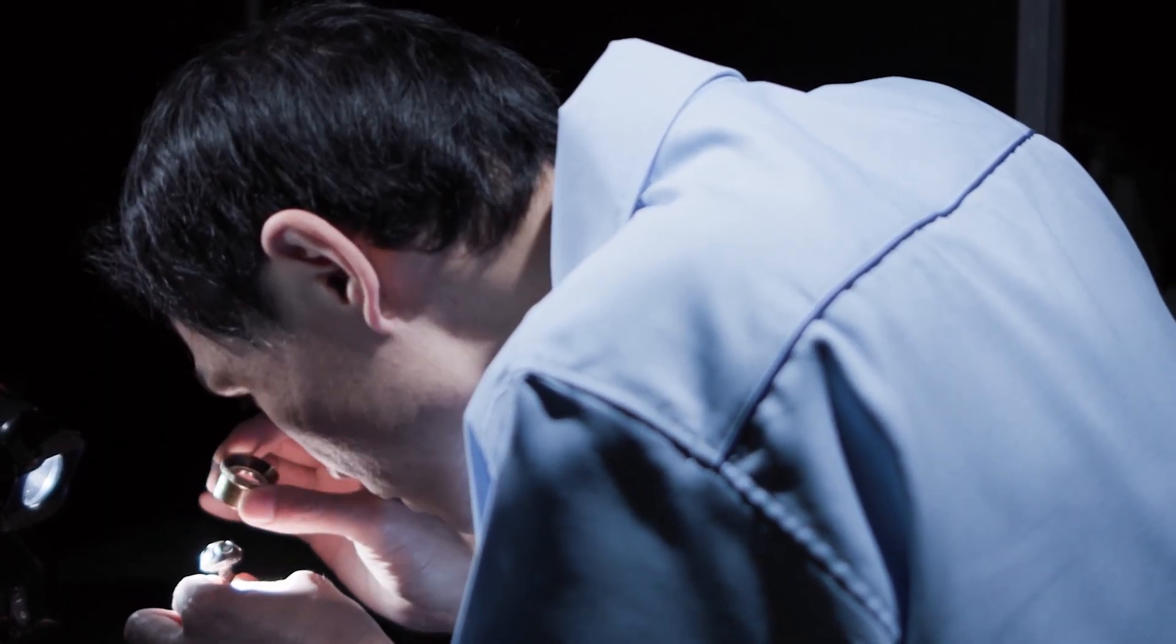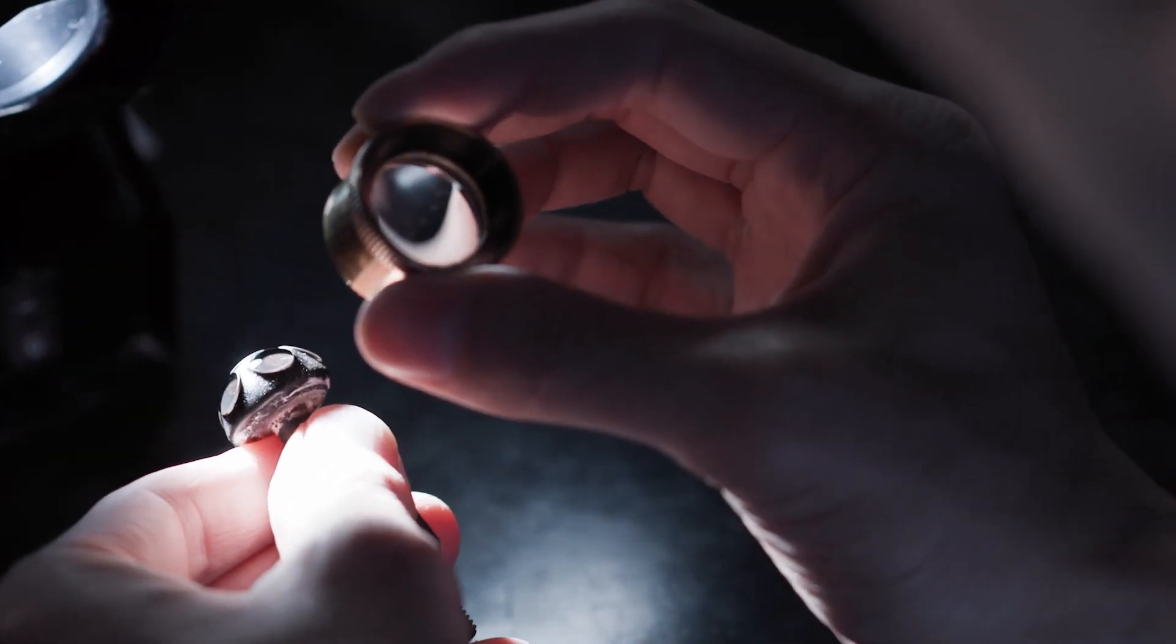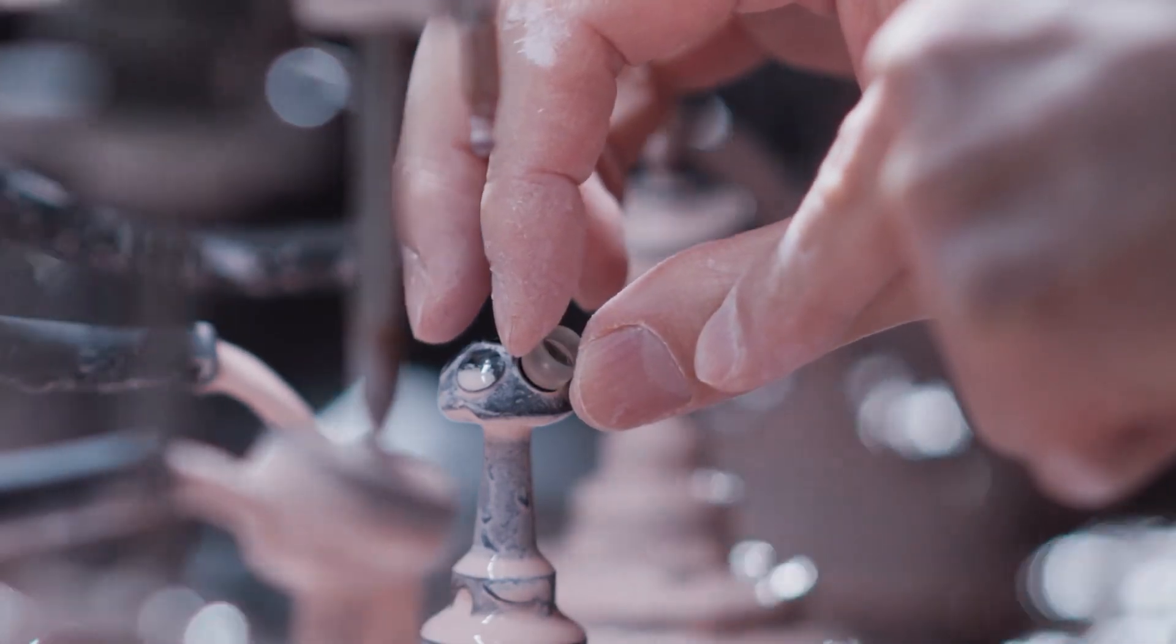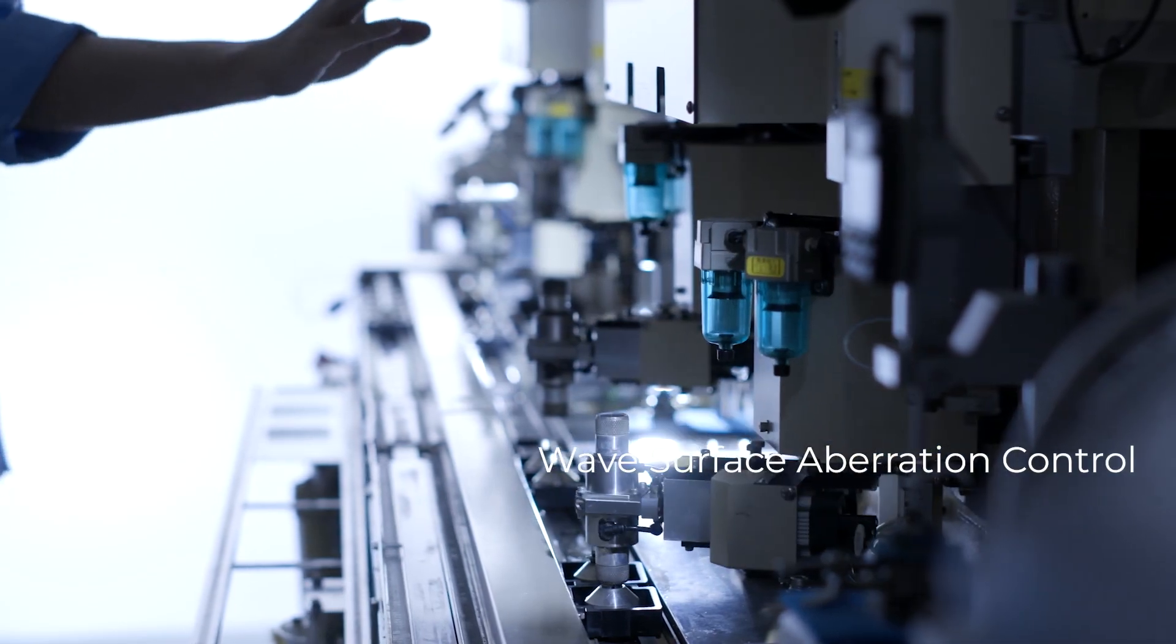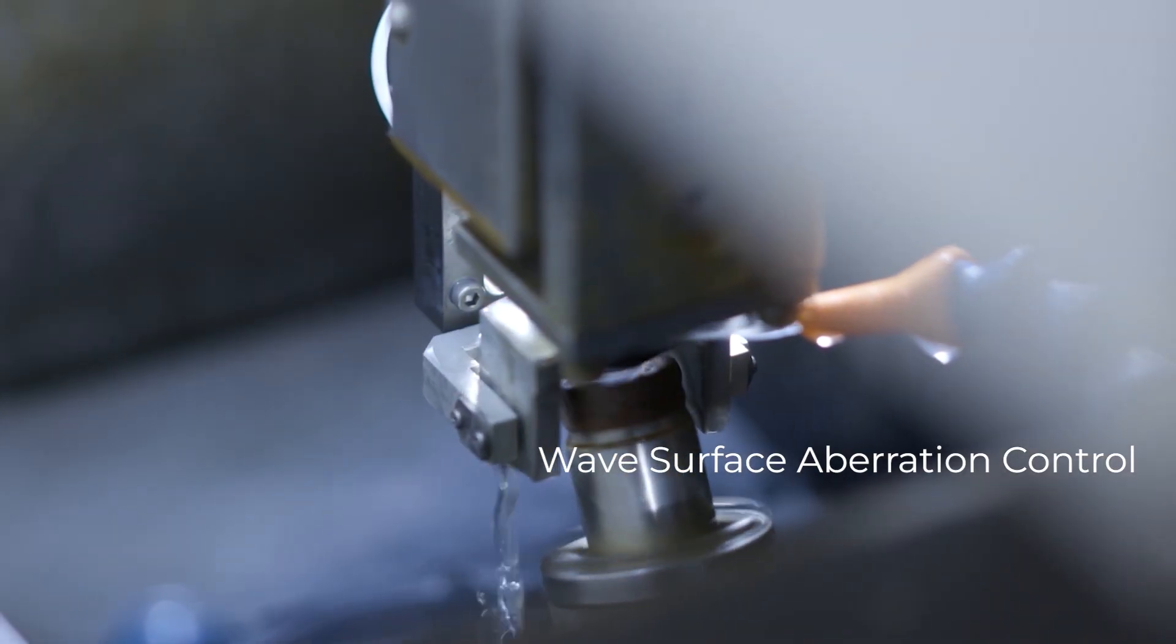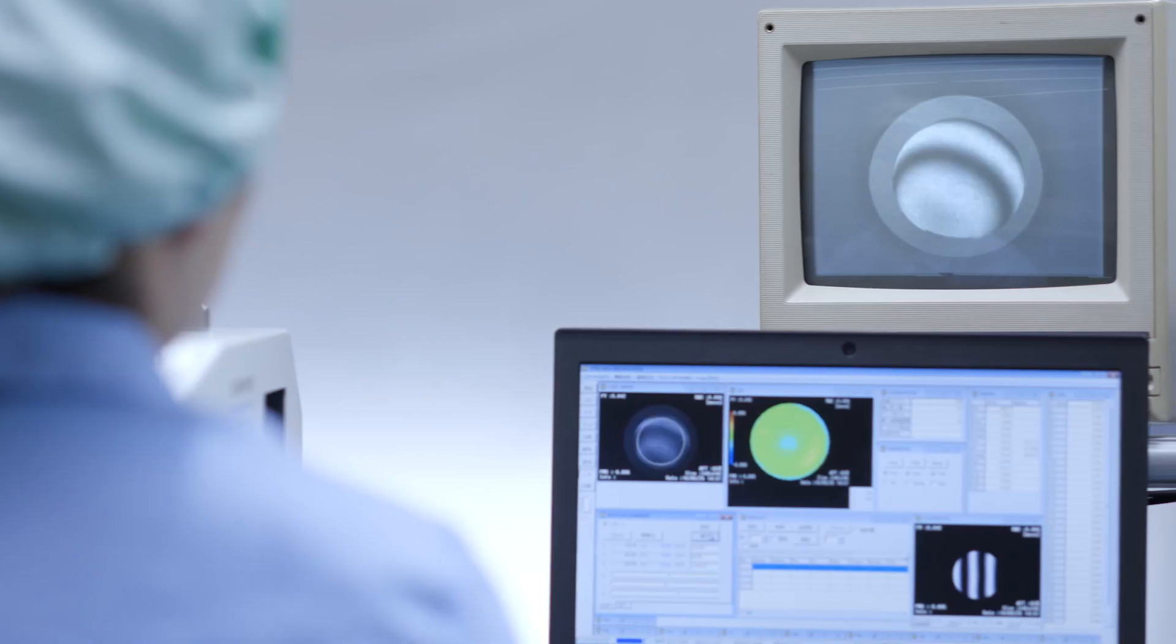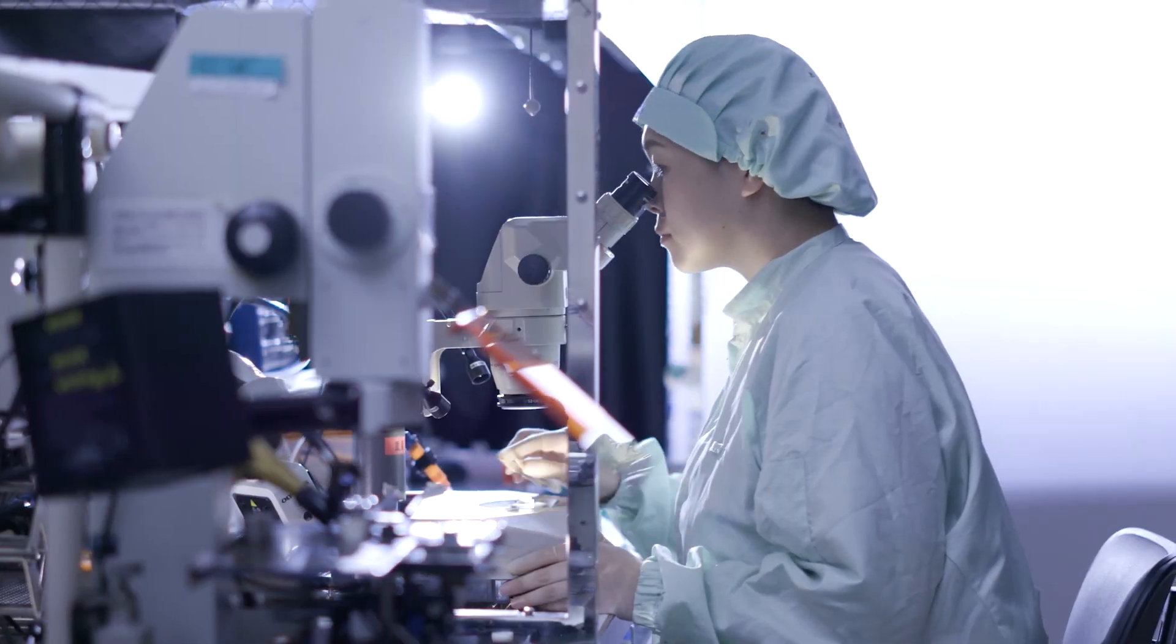But these specialists are unable to efficiently produce optics on a large scale because of the time they invest in polishing lenses to the desired specification without damaging them in the process. A new quality standard, referred to as wave surface aberration control, enables high-quality mass production of optics by simultaneously automating traditionally manual processes such as assembly and optical error measurement.